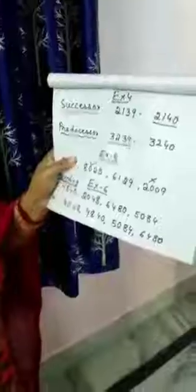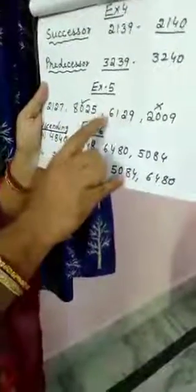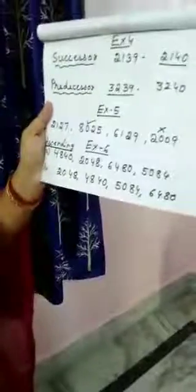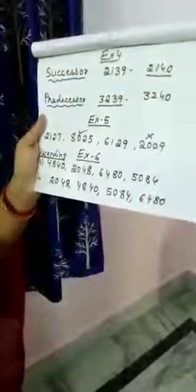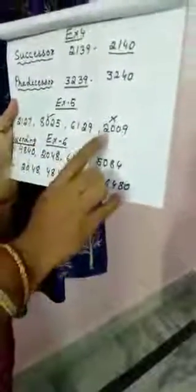Exercise 5 — you have to tick the greatest number and cross the smallest number. Here are some numbers: 2127, 8025, 6129, 2009. Can you tell me which is the greatest number? Yes, 8025 — put a tick on that. And cross the smallest number, which is 2009.